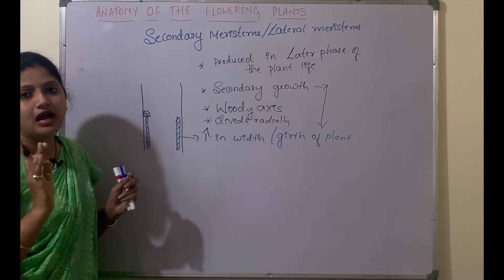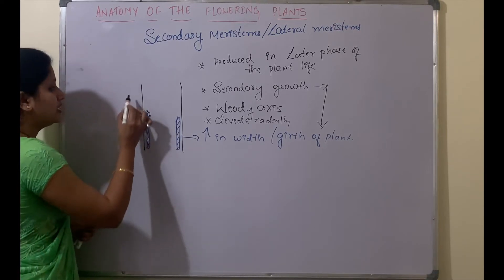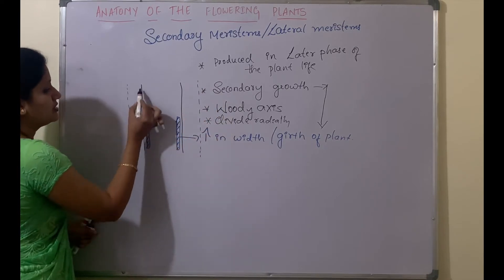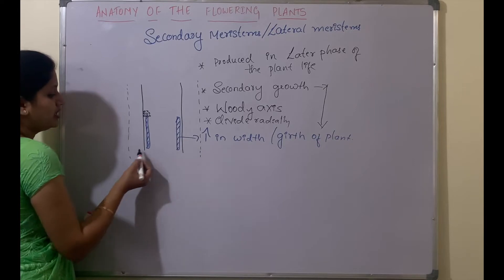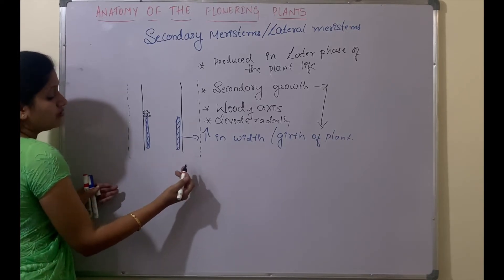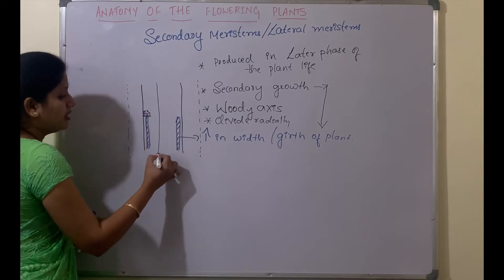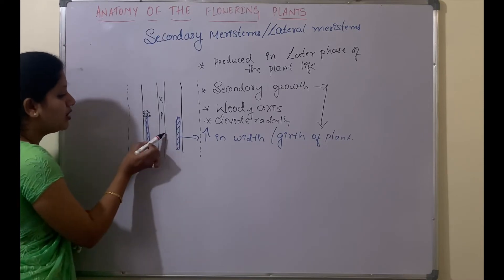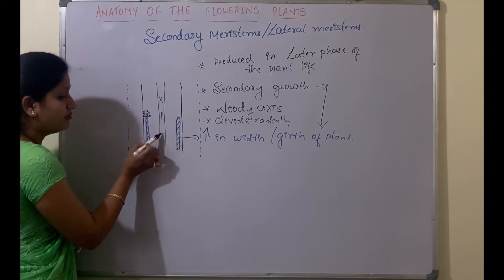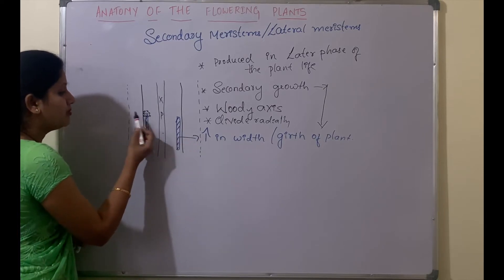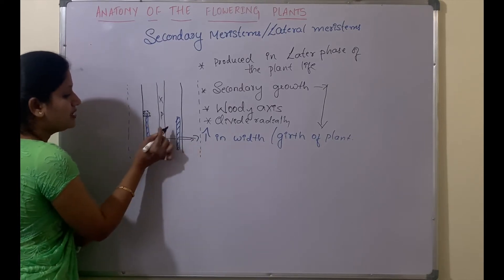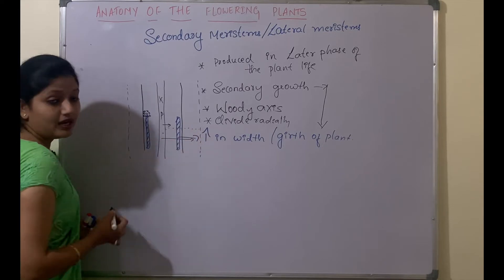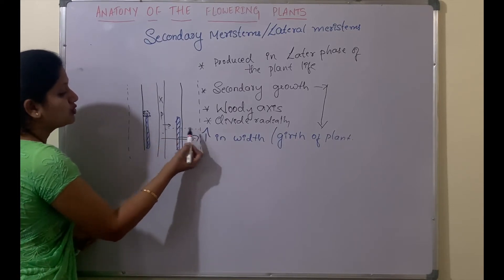When the width starts increasing, the plant body expands. In between, we have xylem and phloem. Now the distance over which the xylem has to transport water and the phloem has to transport food is increased. Previously, the food and water moved only a short distance, but now the distance is very large.